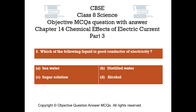Question number 5. Which of the following liquids is a good conductor of electricity? Option A: Sea water. Option B: Distilled water. Option C: Sugar solution. Option D: Alcohol.